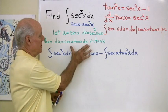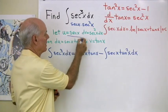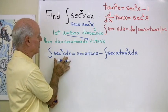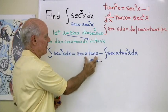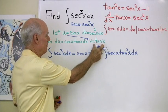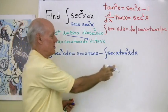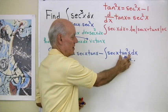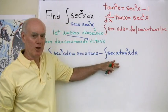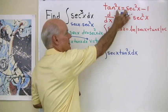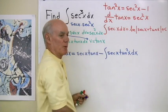When I apply integration by parts — u times v minus the integral of v du — I substitute in and get secant x times tangent x minus the integral of tangent x times secant x tangent x dx, which gives me the integral of secant times tangent squared x dx. It looks like things are getting a little worse, but I want to take the Pythagorean identity and substitute for tangent squared to see what we get.